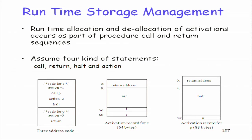We have an activation record corresponding to C and an activation record corresponding to P. Assuming C takes 60 bytes and P takes 80 bytes, these are relative addresses. The numbers are arbitrary and will depend upon the local variables, parameters, and so on.